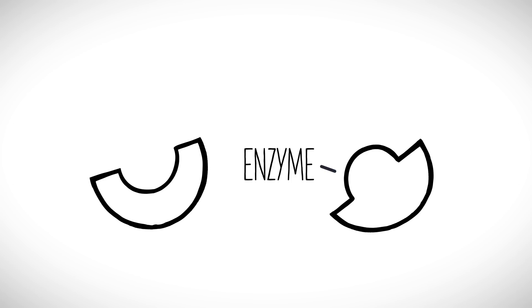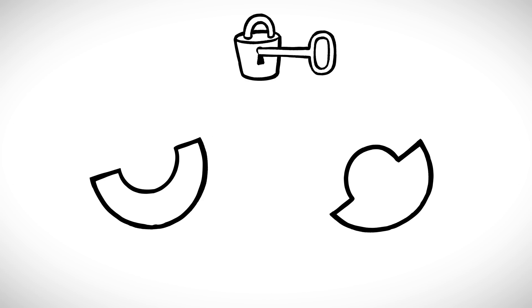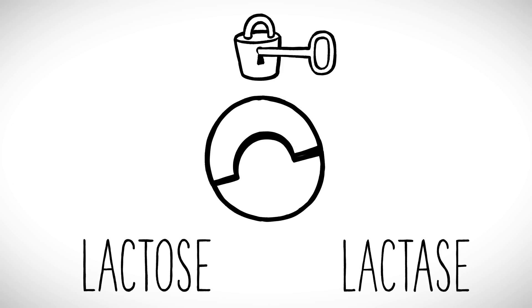Now, enzymes, being catalysts, play a critical role in this process. Think of them like locks and keys. Each enzyme has a unique shape that only fits together with its counterpart. Take a dairy sugar lactose: the enzyme lactase fits like a hand-in-glove with lactose.